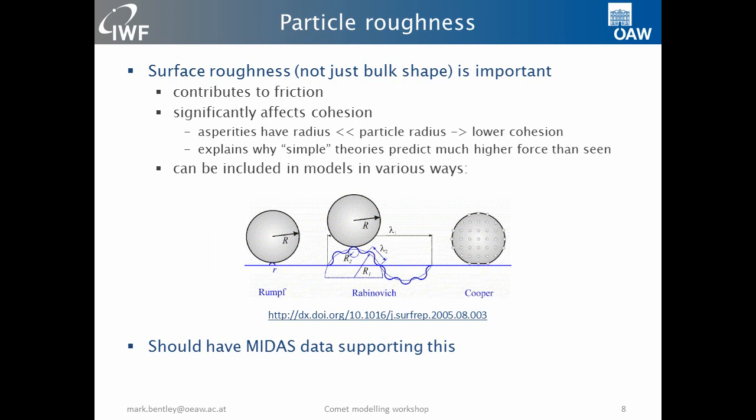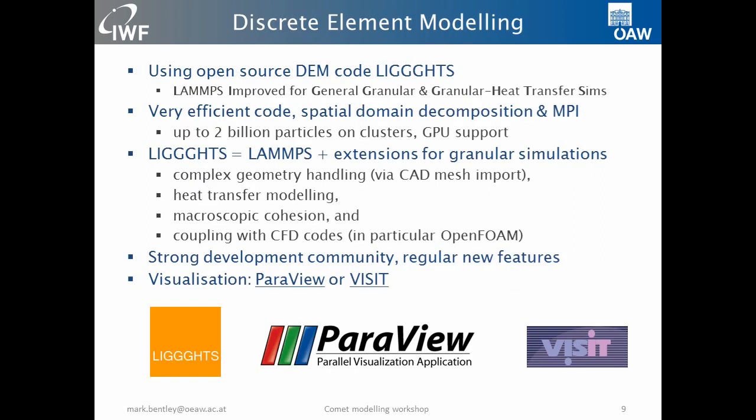Particle roughness is also important, going back to the cohesion case. You can start trying to include these in the models by looking at the radius of asperities and how this affects the contact points and contact area between particles. Hopefully we'll have some MIRAS data to support this. So what I wanted to do was see if it's possible to use the standard technique of discrete element modeling to describe some of these. At the moment I haven't got much to show you that relates to the comet, but I can explain what I hope to do and give some examples of how the technique works.